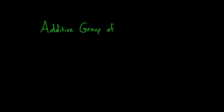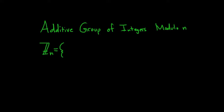In this video we're going to look at what's called the additive group of integers modulo n. We're not going to prove it's a group in this video — we're just going to talk about what it is and look at some concrete examples of performing addition in this group. We define it as follows: Z sub n is equal to all the possible remainders that you get when you divide a number by n, so 0, 1, 2, all the way to n minus 1.